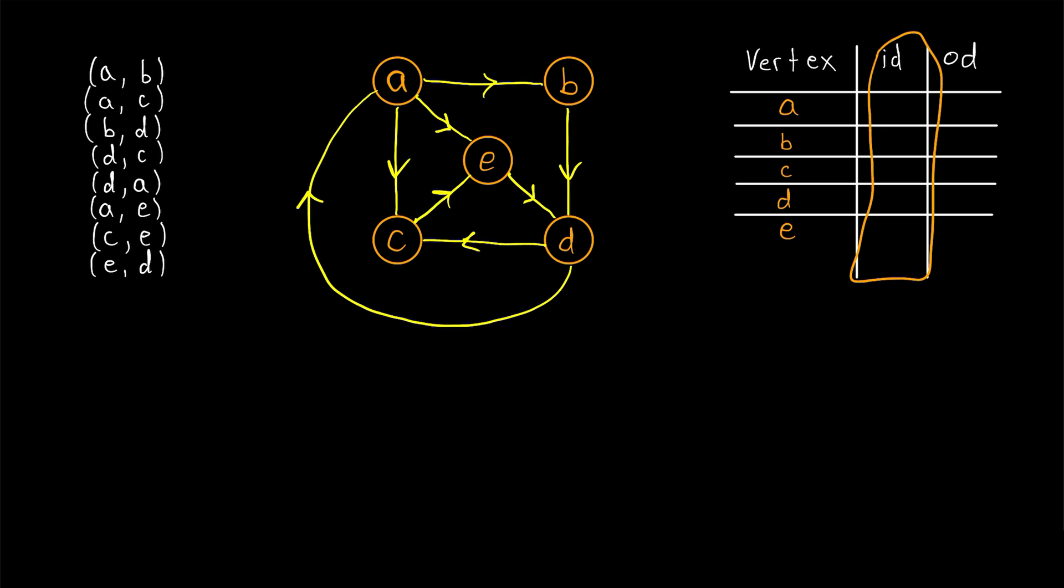Now let's fill in the in-degrees. We could of course reference our graph to figure out the in-degrees, but we could also just look at the set of arcs. The in-degree of A is the number of arcs that end with A. If we look at our list here, we'll see there's only one arc that ends with A, which is this one going from D to A. So the in-degree of A is one.